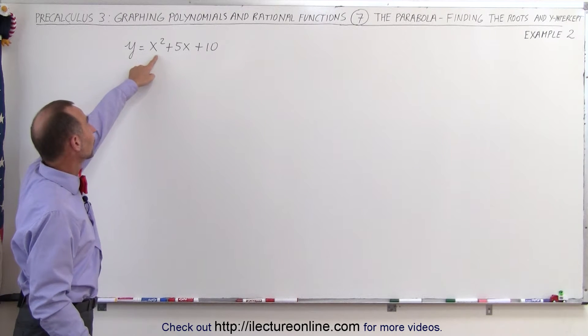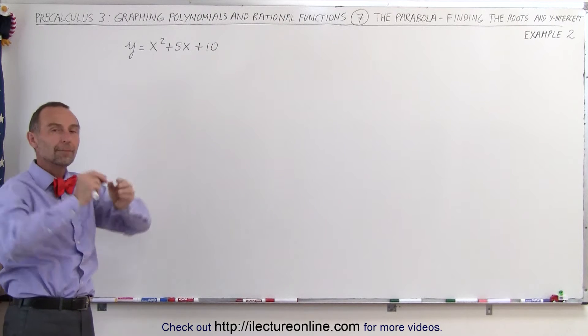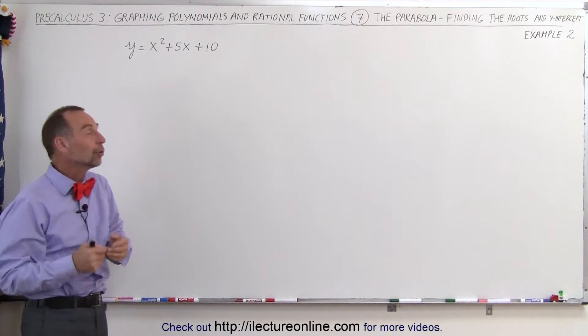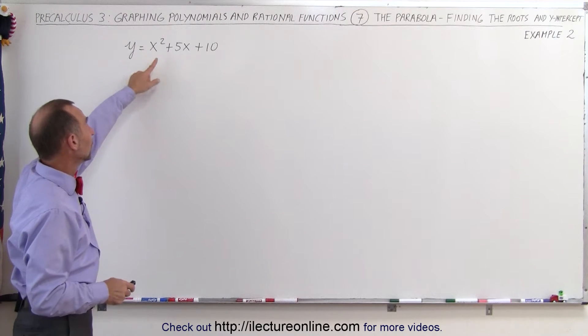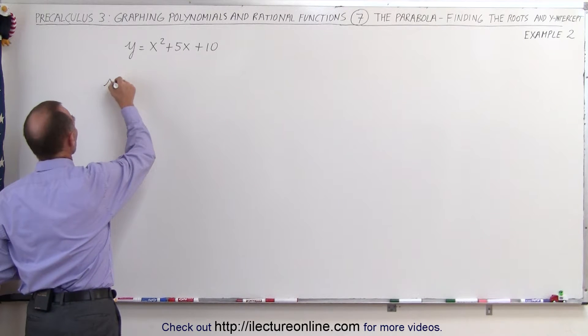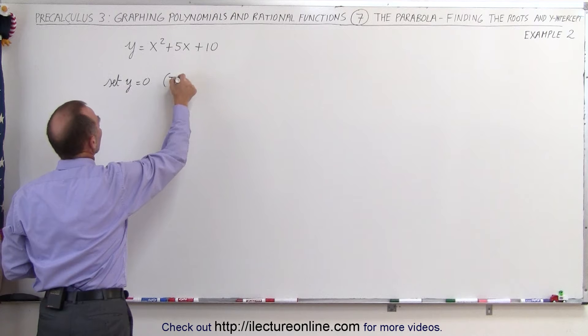We look at the coefficient of the first term. We know that this is positive 1. A positive 1 means the parabola opens upward, meaning it will have a minimum value. But whether or not it has roots, we don't know yet by looking at the first term. We need to go ahead and solve for the roots, and we do that by setting y equal to 0.